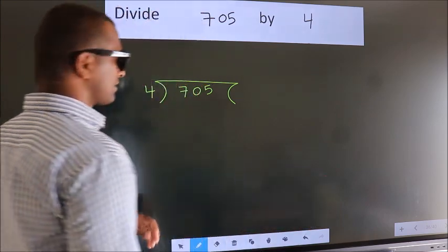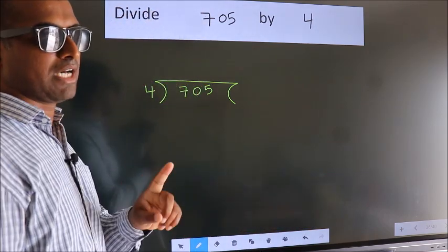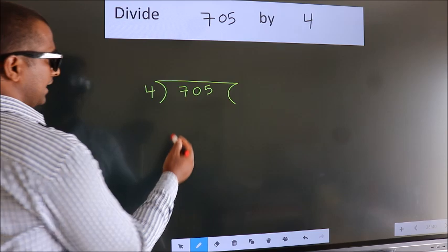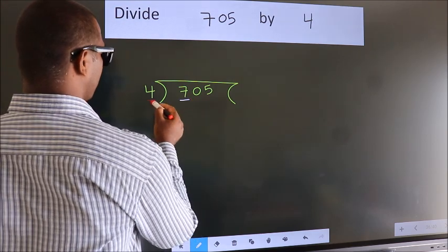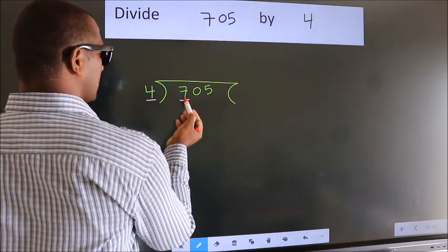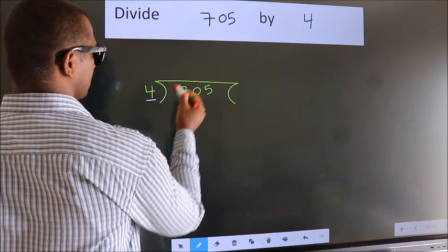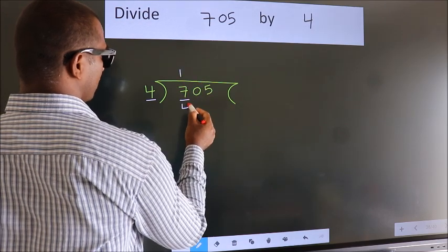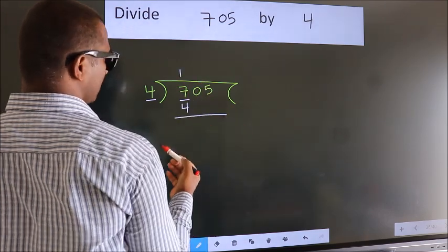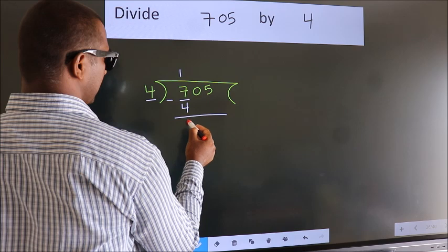This is your step 1. Next, here we have 7, here 4. A number close to 7 in the 4 table is 4 once 4. Now we should subtract, we get 3.